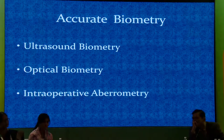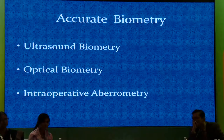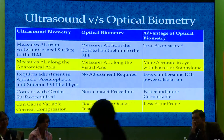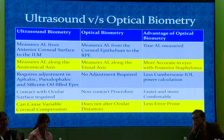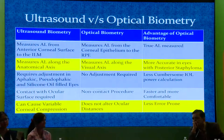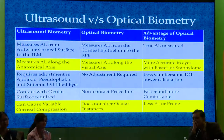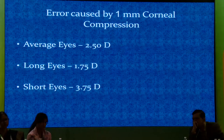You have optical biometry and intraoperative aberrometry. As for ultrasonic biometry, contact biometry should be banned — you should do only immersion or optical; these are the only two options. In optical biometry, the best thing to do is swept-source, and I will tell you more details about why it is superior.